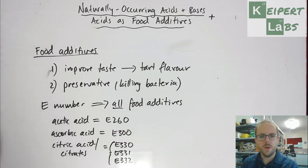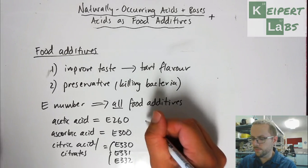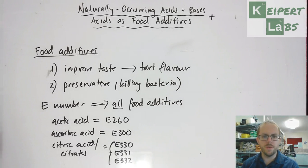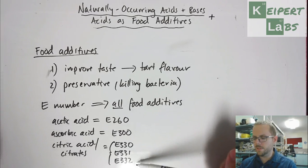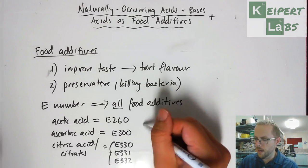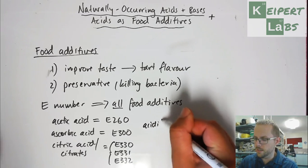So, you can freely look up these E numbers of any food additives online if you're interested, even just to kind of decode what the packet looks like. But so if you see any of these numbers, that's an acid and it's often referred to as an acidity regulator.